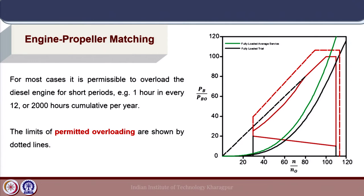For most cases it is permissible to overload the diesel engine for very short periods — meaning the diesel engine can be operated beyond the maximum rated values. Overloading is applied for only very short periods: 1 hour in every 12 hours as a standard, or 2000 hours cumulatively per year. The limits of permitted overloading are shown by dotted lines in the diagram. The standard envelope corresponds to normal operational conditions, while the dotted lines show permitted overloading conditions for particular engine times — but these are only for short duration.